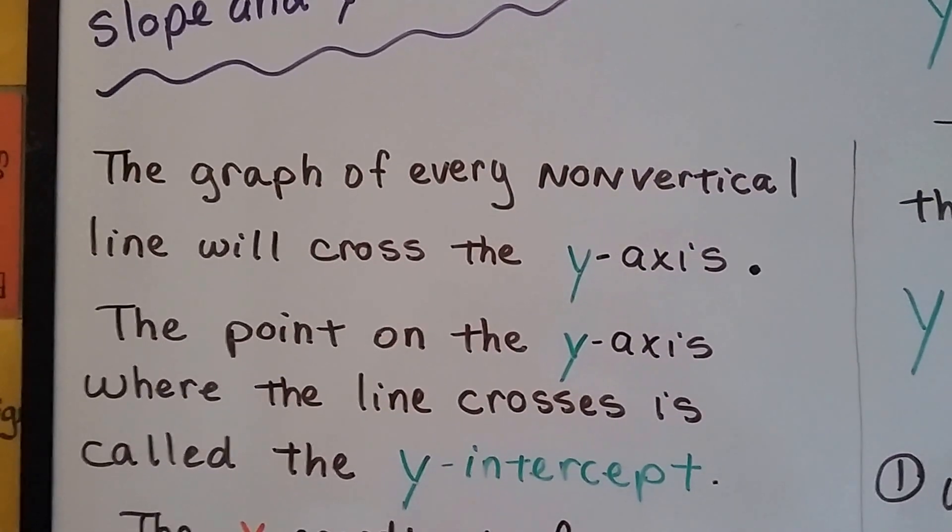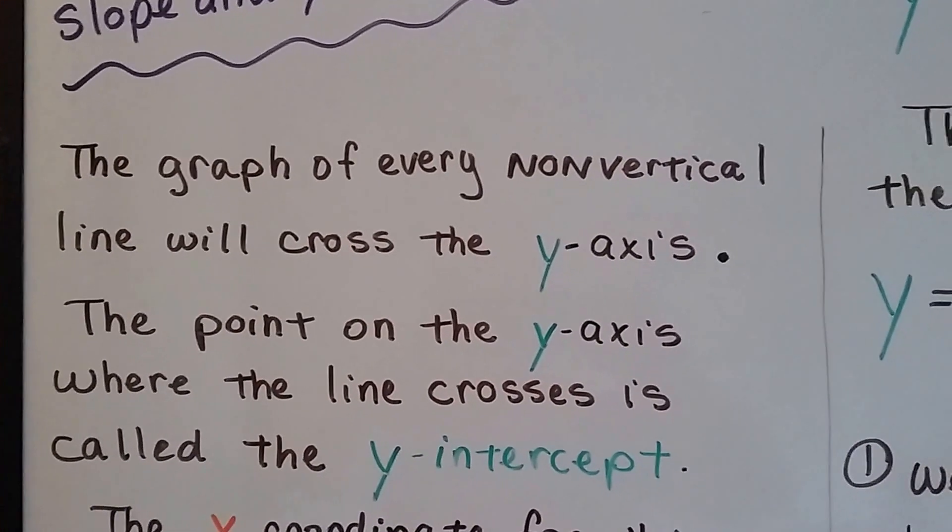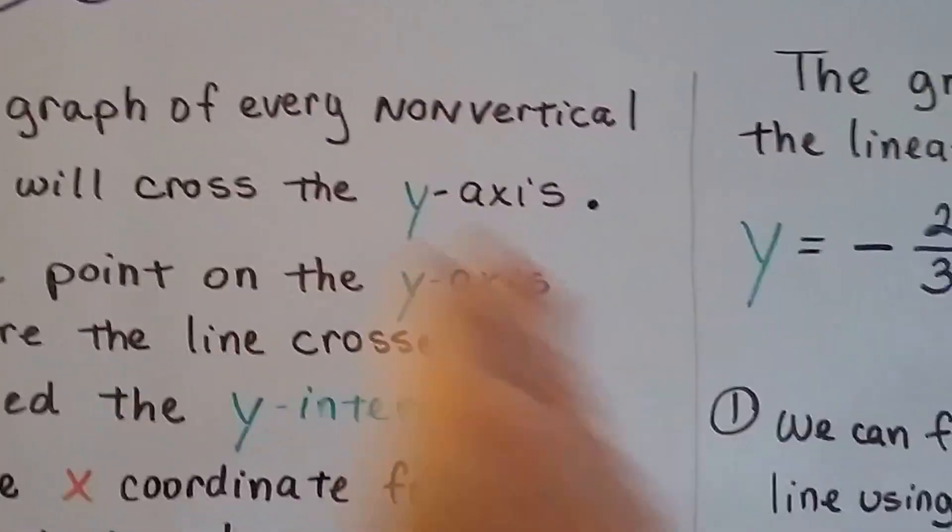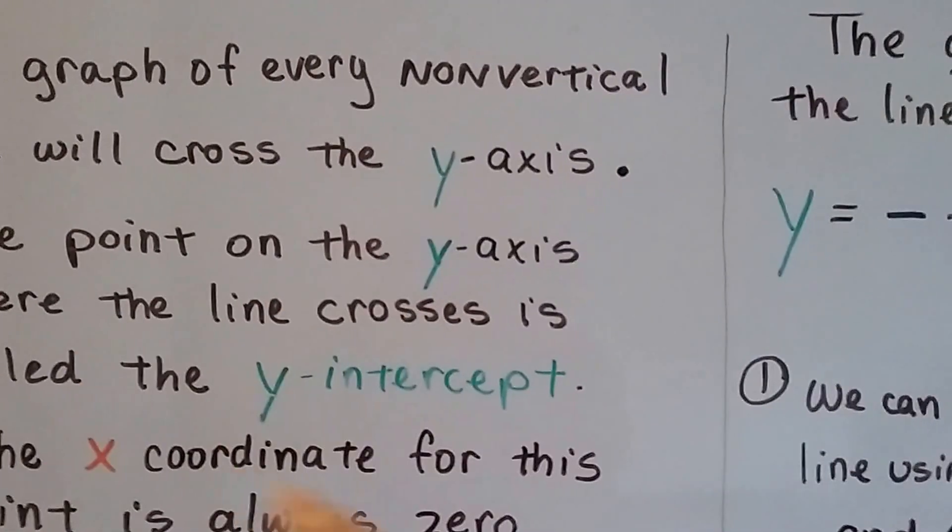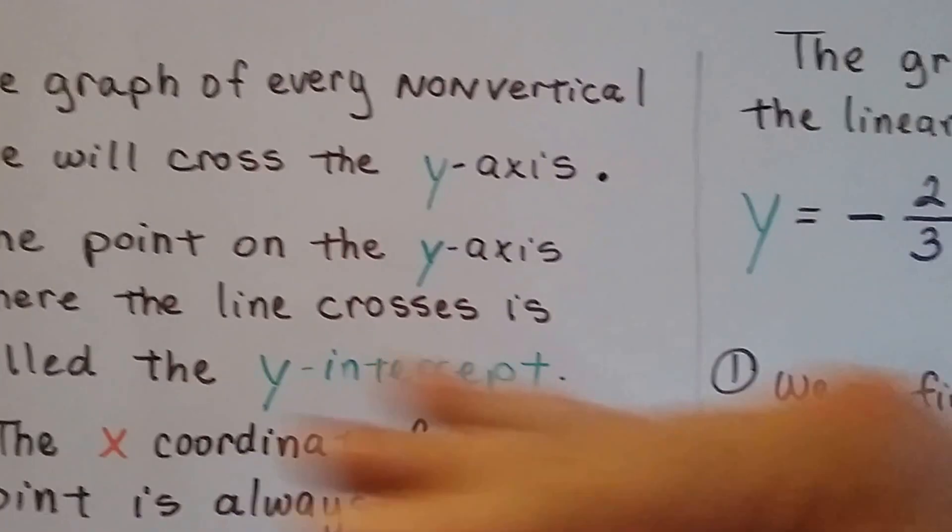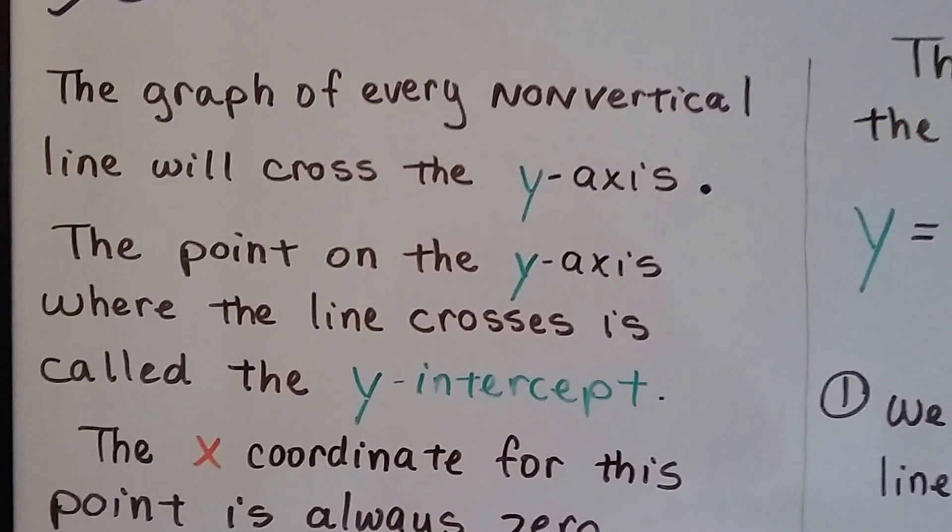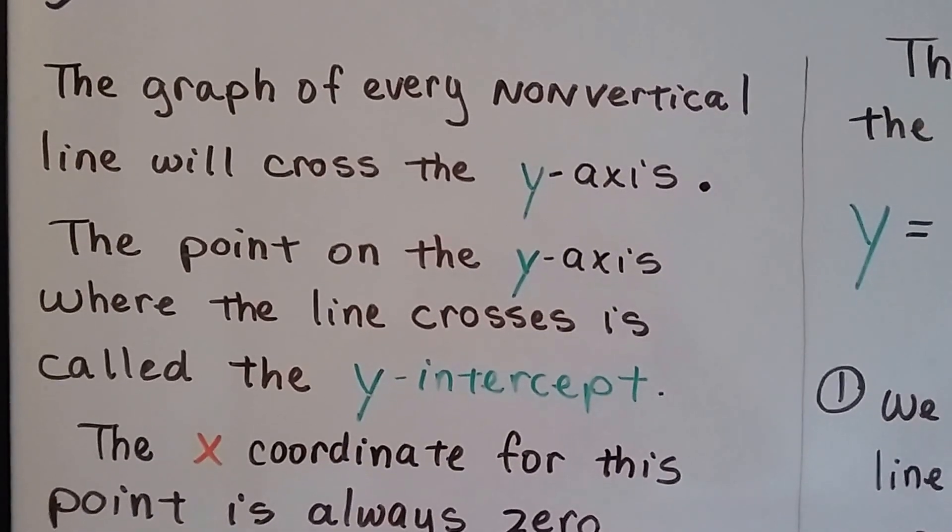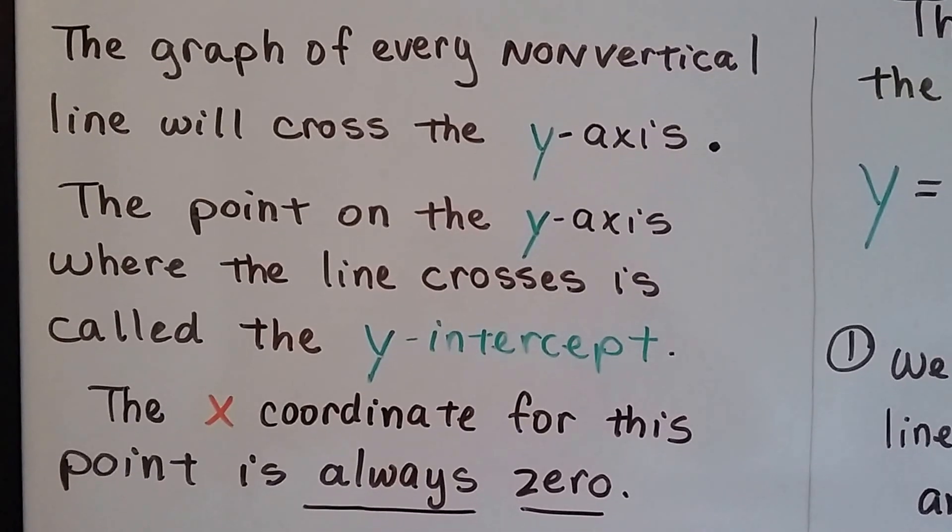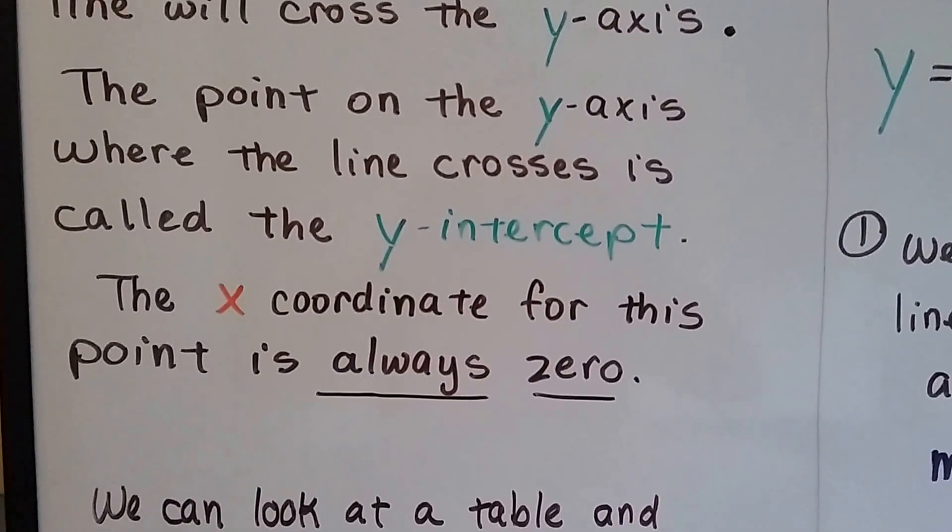The graph of every non-vertical line will cross the y-axis. Vertical means going straight up and down. So if it's non-vertical, then that means it's going across this way or across on a slant that way. It even could be going horizontal. But every single non-vertical line will cross the y-axis. And the point on the y-axis where that line crosses is called the y-intercept.